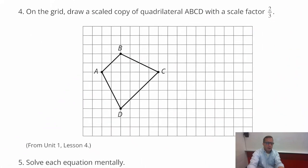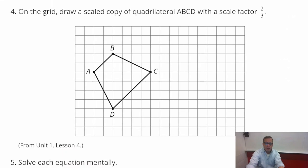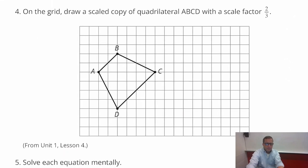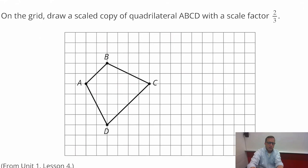Moving on to the next one here. On the grid, draw a scaled copy of quadrilateral ABCD with a factor of two-thirds, two to three. So it'd be kind of difficult, not impossible, it'd be kind of difficult though to use these because those are diagonals. So what I'm going to do to look for the scale factor is I'm going to look at these right here. The horizontal, you know, like if we look at the width of it horizontally and we look at the vertical height of it right there. And I notice that both of those, when I count those one, two, three, four, five, six, I get six both ways.